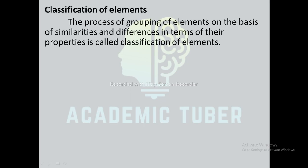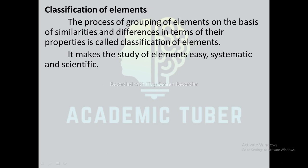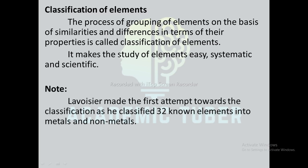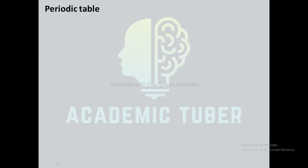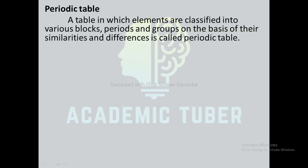Classification of elements: the process of grouping of elements on the basis of similarities and differences in terms of their properties is called classification of elements. Classification of elements makes the study of elements easy, systematic and scientific. Lavoisier made the first attempt towards classification as he classified 32 known elements into metals and non-metals, but this classification was unbalanced because most of the elements were metals and very few were non-metals.